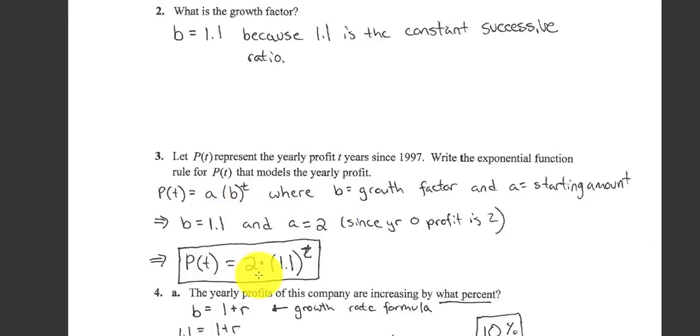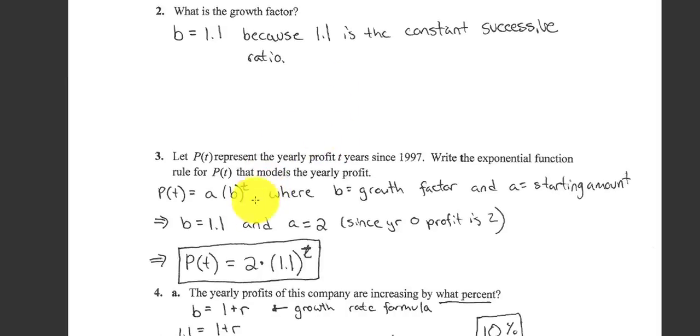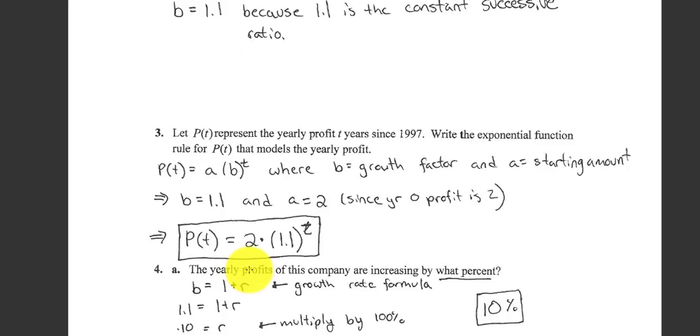A is the initial profit in this case. A is your starting value. When X is zero, what is Y? Or when T is zero, what is P? So the initial profit is two. If this company starts out in 97, the profit's 2 million dollars that year. So I put in the two for my A. So it's AB. A is your initial value.